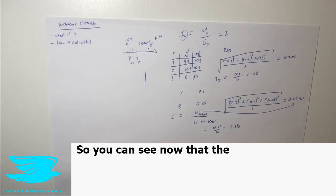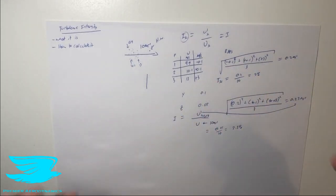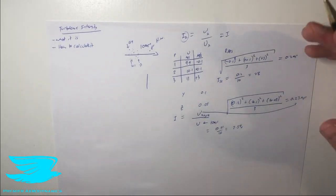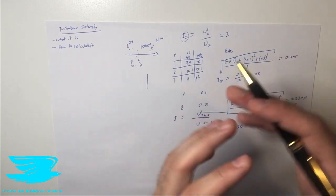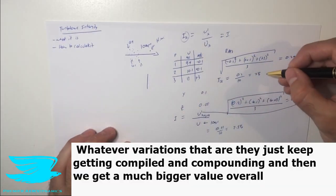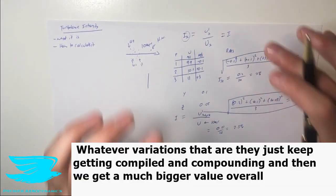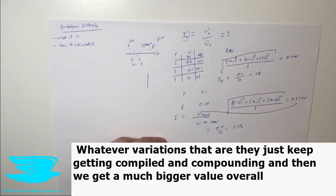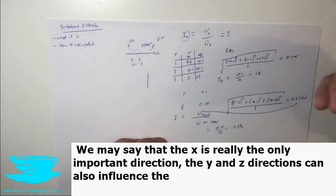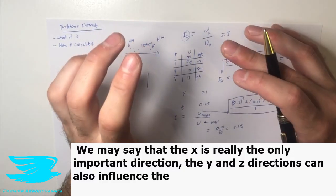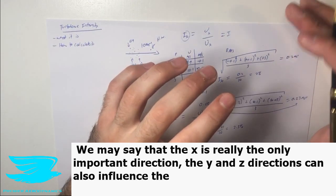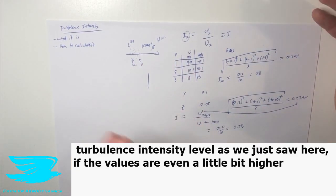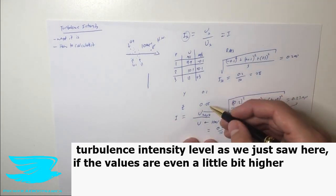So you can see now that the turbulence intensity level in all three directions, that we've calculated and summed together, is greater than in just one direction, which makes sense because we're only dealing with the magnitude here when we're looking at the directions. So whatever variations there are, they just keep getting compiled and compounding, and then we get a much bigger value overall. And that is why even though we may say that the X is really the only important direction, the Y and Z directions can also influence the turbulence intensity level, as we've just seen here, if the values are even a little bit higher.